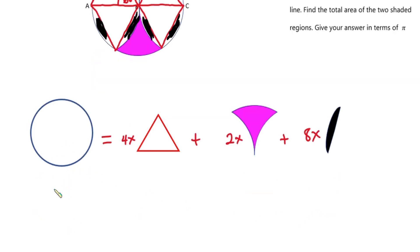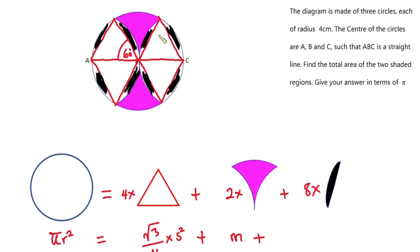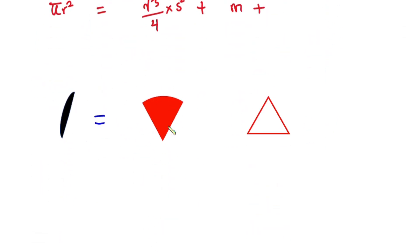Now we know that the area of a circle is given by pi r squared. Then the area of an equilateral triangle is equal to square root of three divided by four, times s squared, where s is the side of the equilateral triangle. Now let's pay attention to this circular segment. If you consider this sector over here — we see that the sector is made up of the shaded region and the circular segments. So if we make the circular segment the subject, we have: area of the circular segment equals area of the sector minus area of the equilateral triangle.